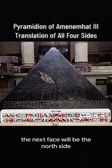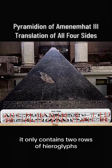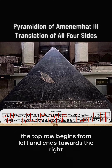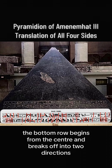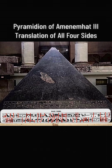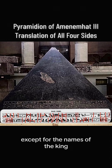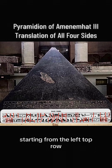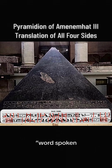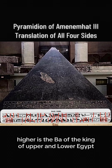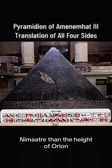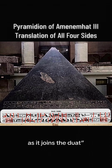The next phase will be the north side. It only contains two rows of hieroglyphs. The top row begins from left and ends towards the right. The bottom row begins from the center and breaks off into two directions — the hieroglyphs are identical on either side, except for the names of the king. Starting from the left top row: Word spoken. Higher is the Ba of the king of Upper and Lower Egypt, Nimaatre, than the height of Orion as it joins the Duat, which is the underworld.